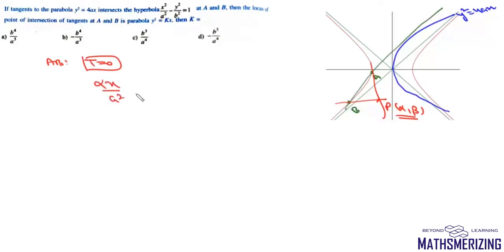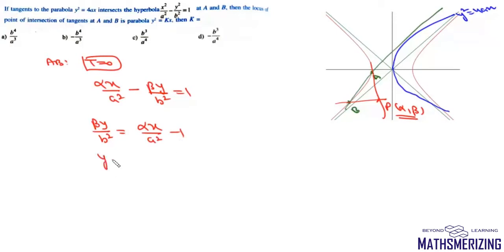To find the locus of the point of intersection of tangents at A and B, let this point be (α, β). We can write the equation of chord of contact of A and B as T equals 0, giving αx/a² minus βy/b² equals 1. This chord of contact must be a tangent to the parabola, so we rewrite it as y equals (αb²)/(βa²) · x minus b²/β. Here m = αb²/(βa²) and c = −b²/β.